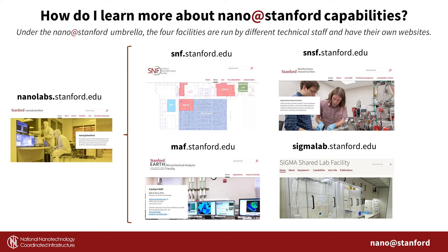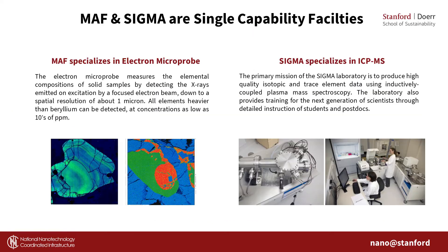The best place to learn about our capabilities is through our websites. The four facilities are run by different technical staff and have their own rules and regulations. MAF and SGMA are single capability facilities. With MAF's electron microprobe, you can evaluate structural defects and phase distribution within complex samples. SGMA's mass spectrometer includes key capabilities in the areas of radiogenic isotope geochemistry and highly sensitive elemental analyses of both solid and liquid samples.